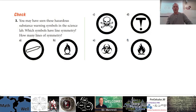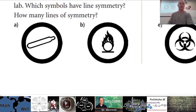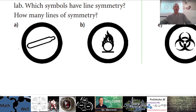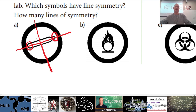Number three looks at hazardous warning symbols from the science lab and asks which symbols have line symmetry and how many lines. Looking at the first symbol closely — does it have line symmetry? If you draw a line right through the middle, there is a line of symmetry there. Does it have another one? No, because this part and this part are not mirror images of each other — so just the one.